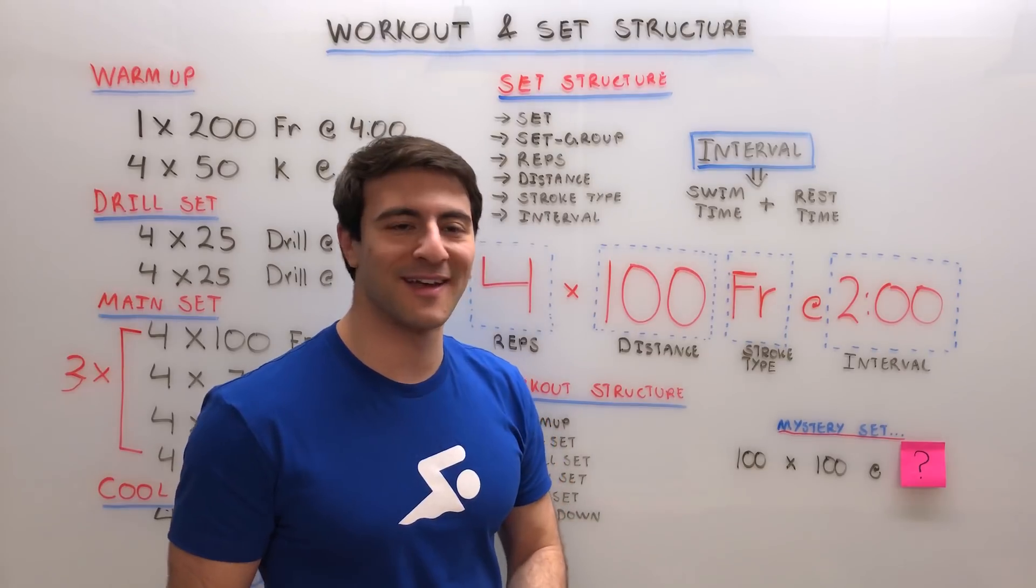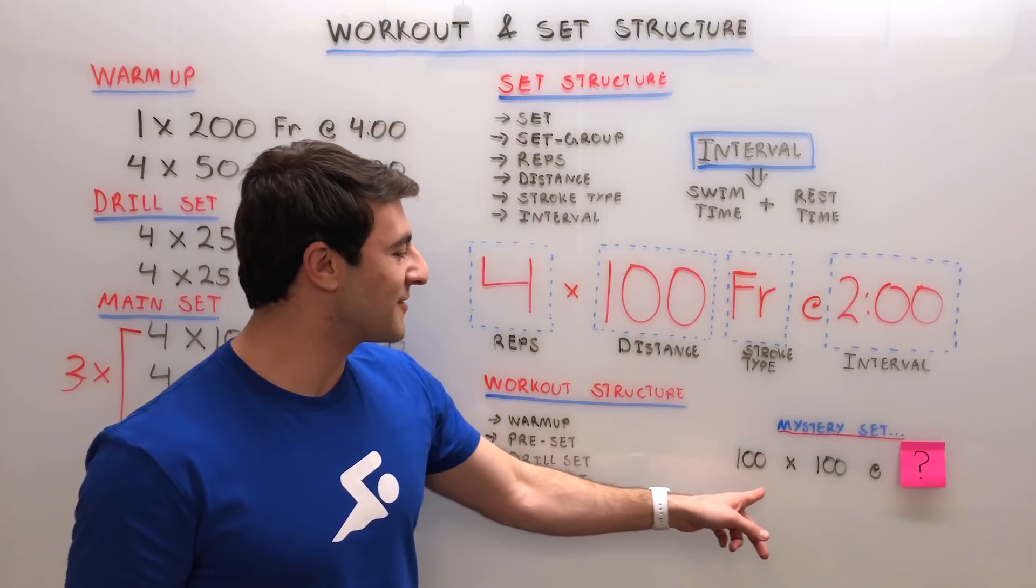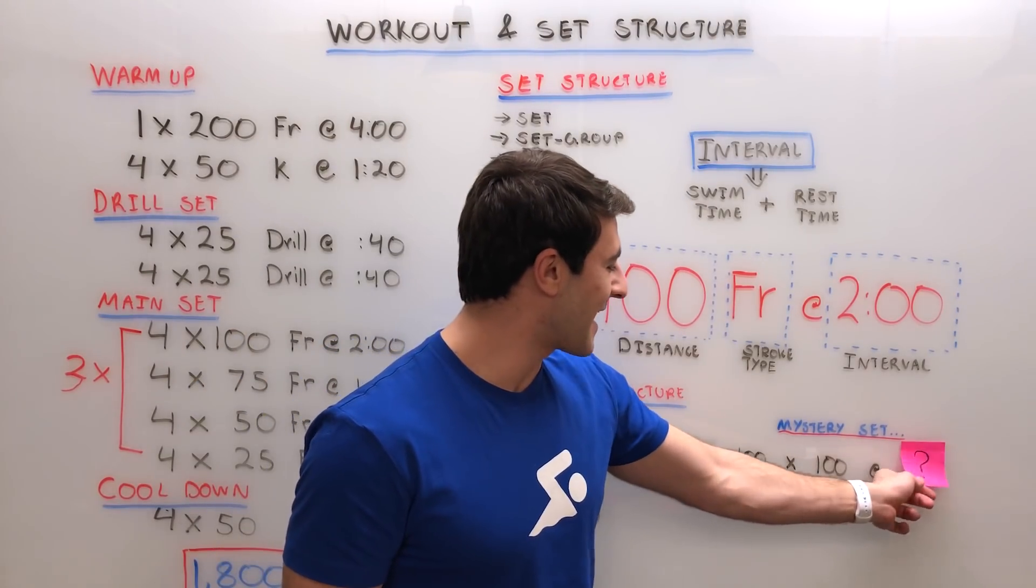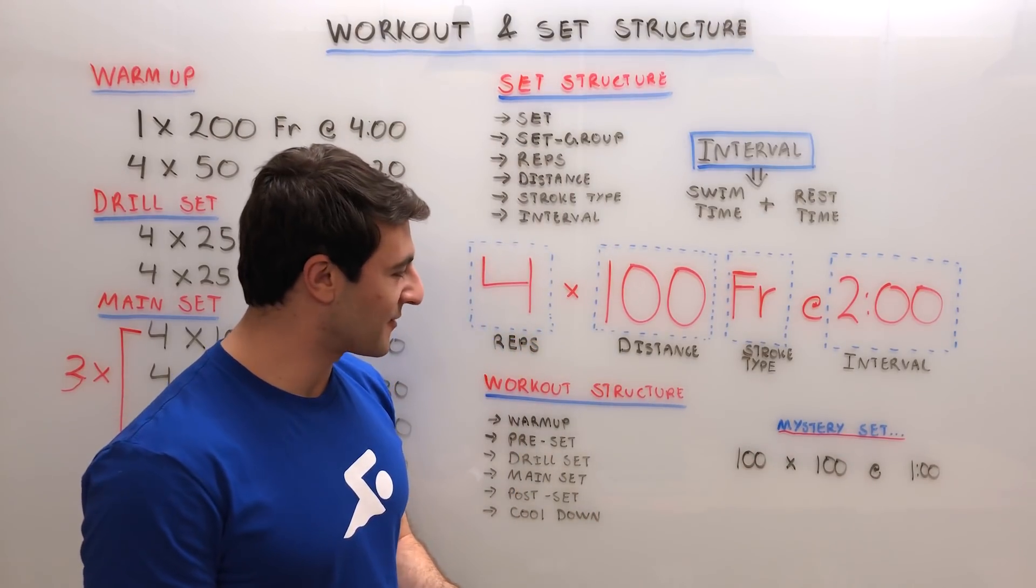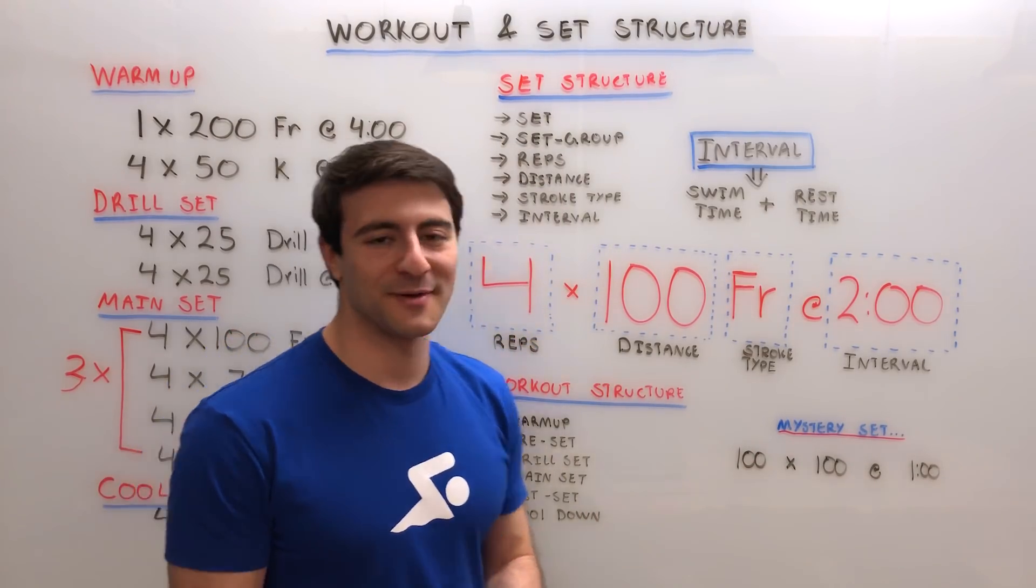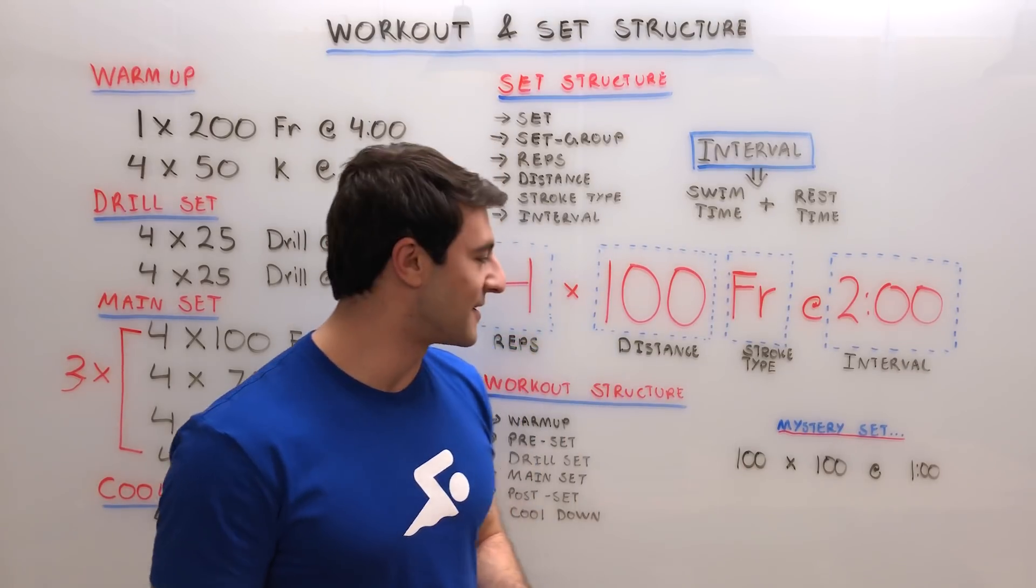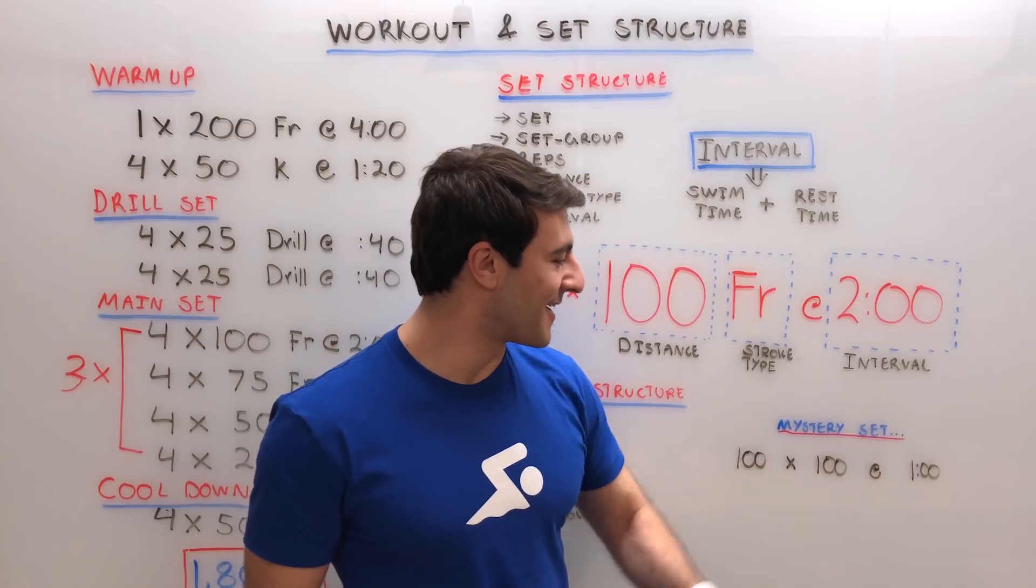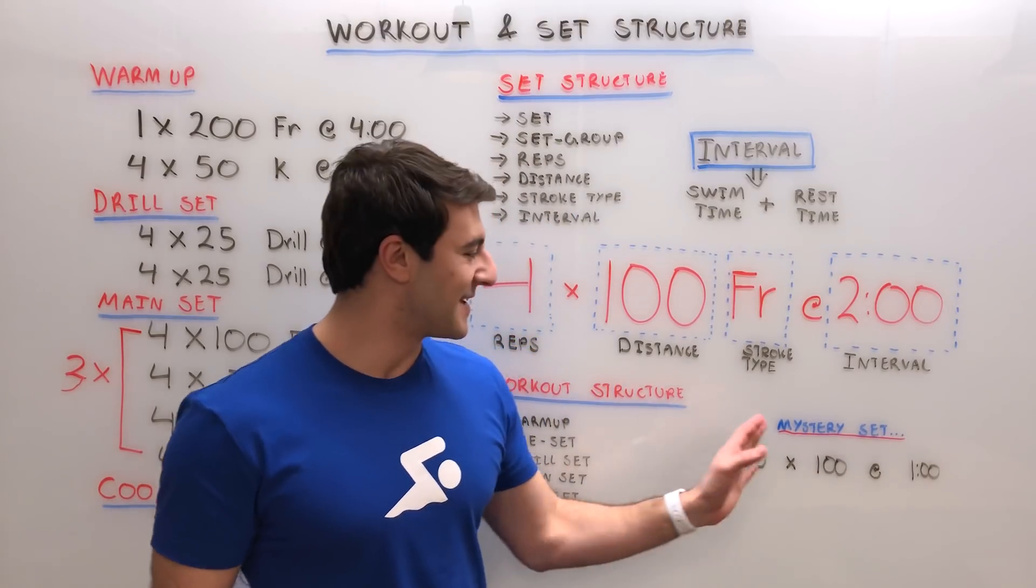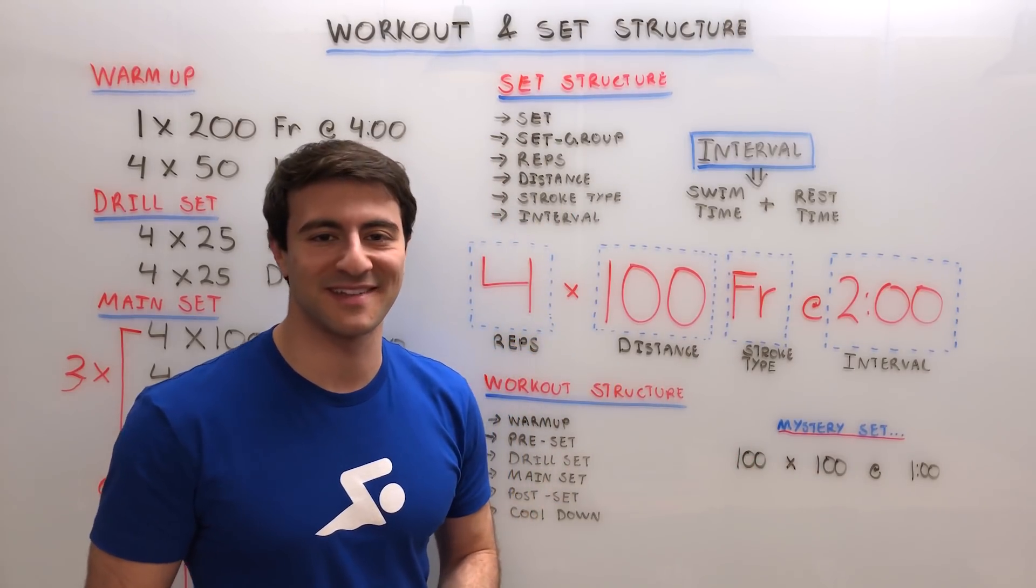If we reveal door number one: 100 times 100 at the minute. So this would take 100 minutes and it would be 10,000 meters. This is called Old School Monday. Most people can't swim 100 in a minute, but it's always cool to see some ridiculous set like that.